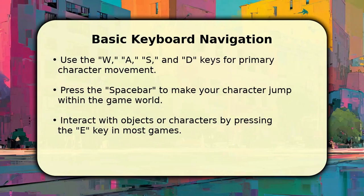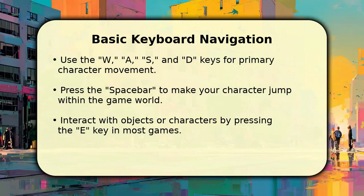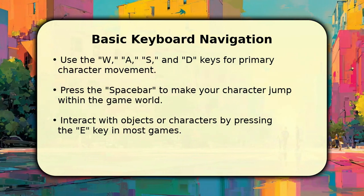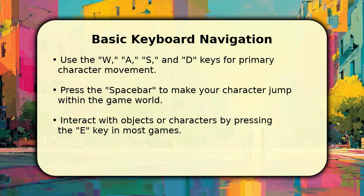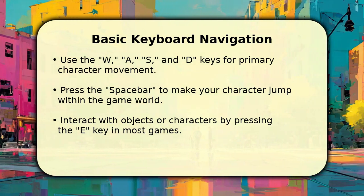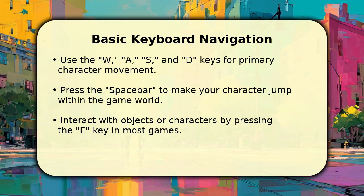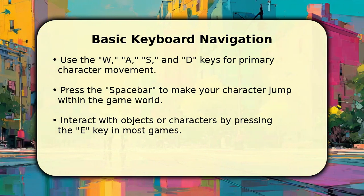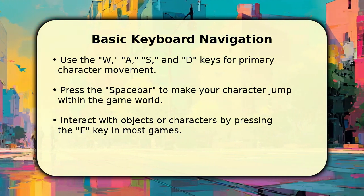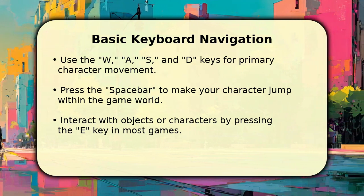Getting around in Roblox with your keyboard is straightforward. You will use the W, A, S, and D keys for forward, left, backward, and right movement, respectively, just like on a computer. The Spacebar is your dedicated Jump key, allowing your character to leap over obstacles or reach new heights. Many Roblox experiences use the E key for interacting with items or non-player characters, so keep that in mind.